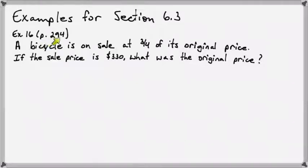The first example that we're going to look at is from page 294 of your textbook, it's example 16. And it says, a bicycle is on sale at three-fourths of its original price. If the sale price is $330, what was the original price? So the key on a word problem is always to write down what you know in the form of an equation.